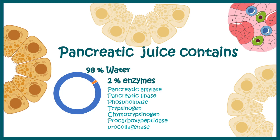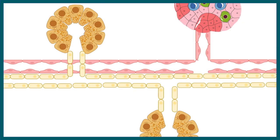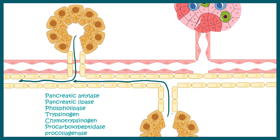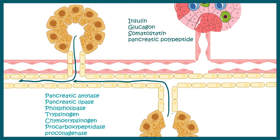The acini secrete digestive enzymes which move through the ductal pathway and reach the intestine. Blood vessels innervate the pancreas and collect pancreatic hormones from the endocrine part, which then act on several parts of the GI tract and elsewhere. The major hormones secreted from the pancreas are insulin, glucagon, somatostatin, and pancreatic polypeptide.